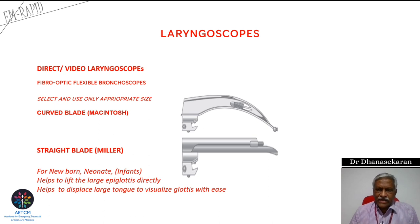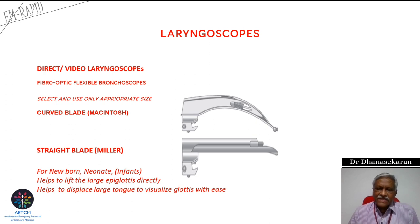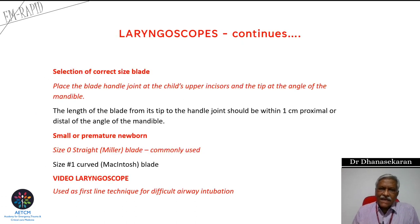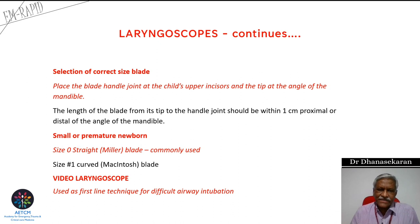Laryngoscopes are available in both straight and curved blades, in different sizes starting from 00 or 0. To select the appropriate size, place the tip of the laryngoscope blade at the angle of the mandible — the handle-blade junction should correspond to the upper lip or the middle of the incisors. The Miller blade is used in very small children.